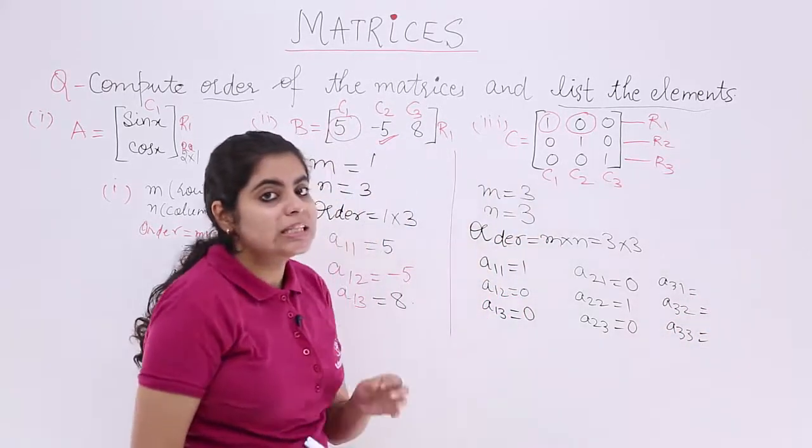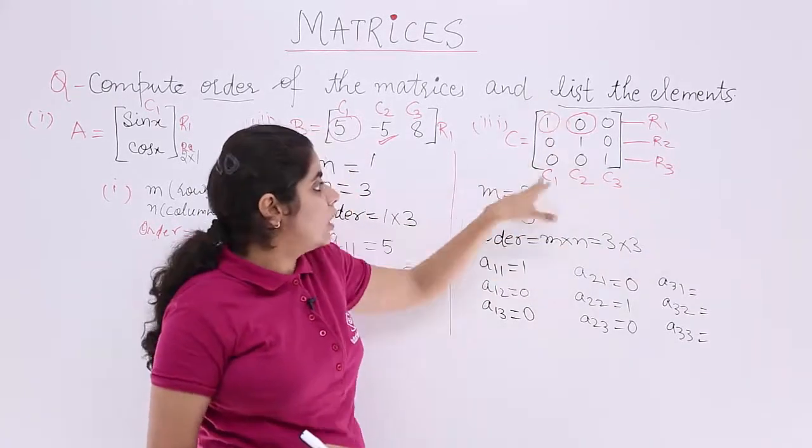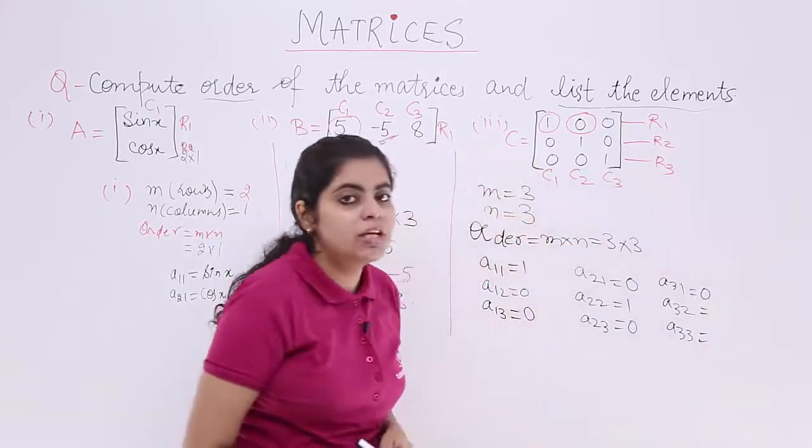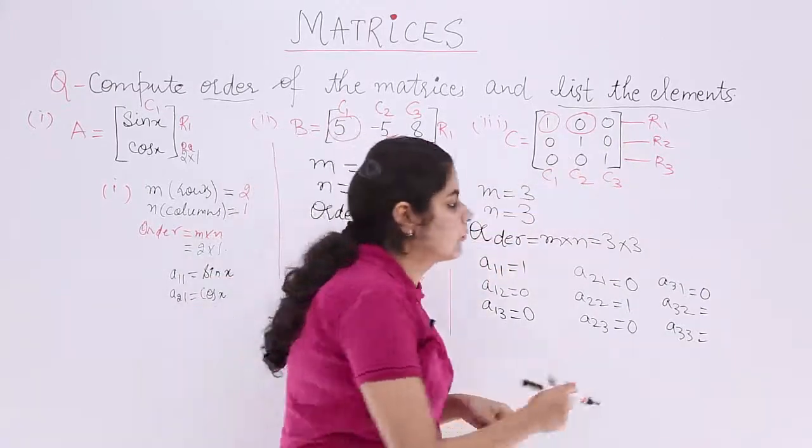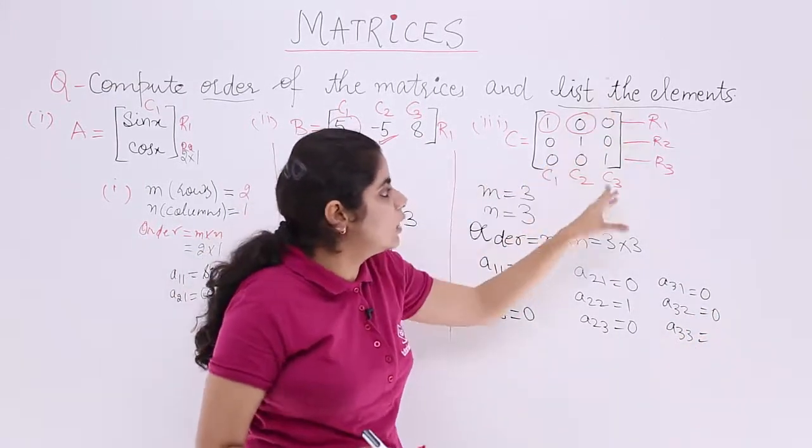Similarly, quickly let's write A31, A32, A33. A31 means third row, first column. Third row, first column is 0. A32, third row, second column. Third row, second column is 0. A33, third row, third column is 1.